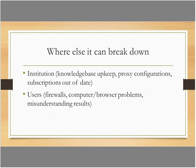It's not only at the provider side where the process can break down—it can also break down at the institution or user level. For the institution, if we don't keep our knowledge base up to date to reflect subscription changes, don't keep proxy configurations current, or don't keep up with paying subscriptions, the process can break down. For users, issues can include personal computer firewalls, browser problems such as corrupted cookies, and misunderstanding the results provided to them.